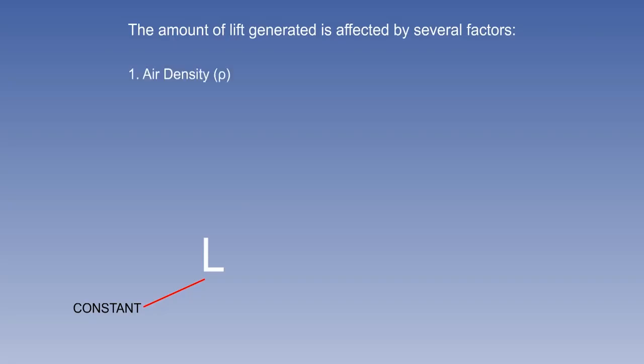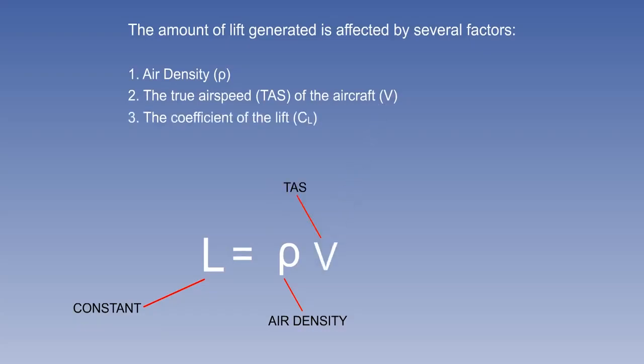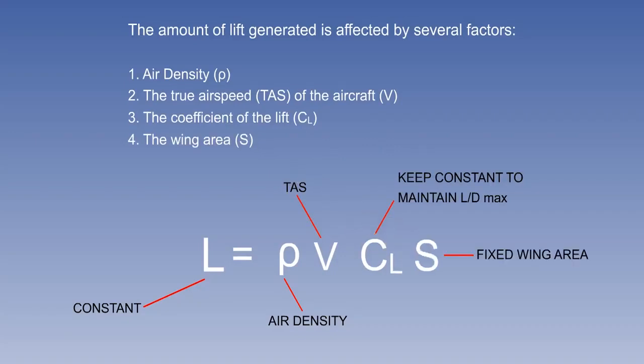First, air density denoted by the symbol rho. Next, the aircraft's true airspeed or TAS enters the equation as V. The next factor is the coefficient of lift. The final factor is the wing area.